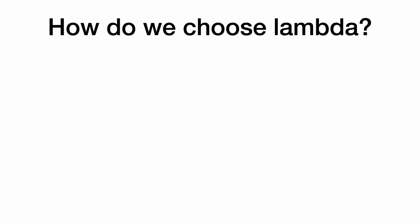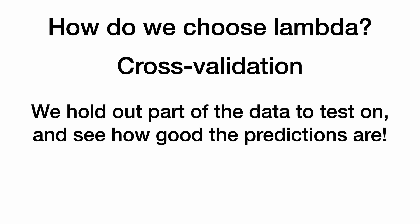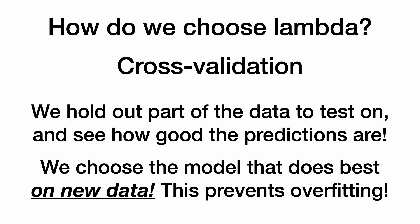Now how do we choose lambda? We usually use cross-validation. We hold out a part of the data set to test on and see how good the predictions are. And we choose the model that does the best on new data, not the old data because we don't want to overfit our model. This prevents overfitting by using the new data to choose the model.